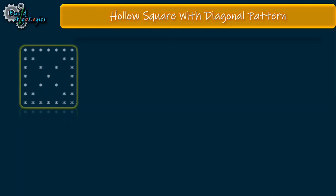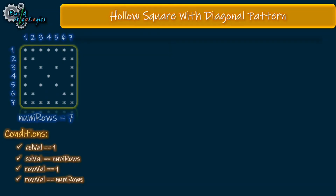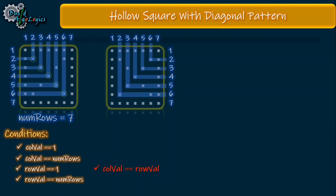Finally, we reach the last pattern: hollow square with diagonal. The four hollow square conditions remain the same since we still need the hollow square border. Now we focus on the diagonal parts. For the first diagonal (top-left to bottom-right), the star is printed only when `row_well == col_well` — for example, when `row_well` is 1 and `col_well` is 1, when `row_well` is 2 and `col_well` is 2, and so on. That gives us the first extra condition. Now we need to derive the second condition for the other diagonal.